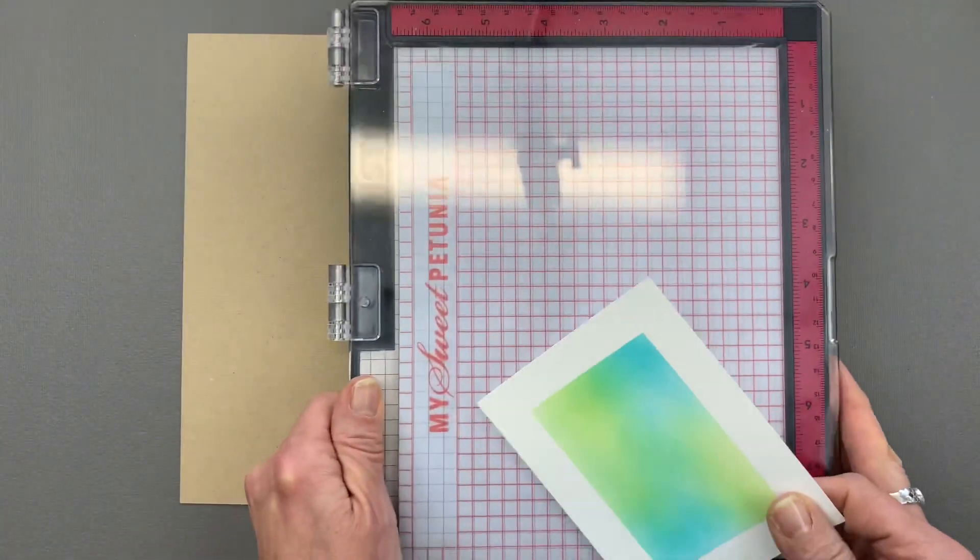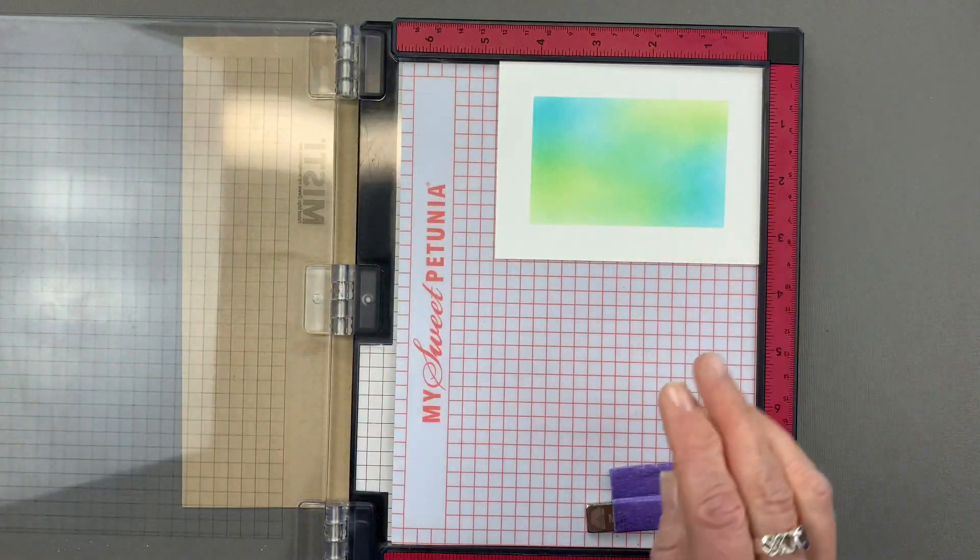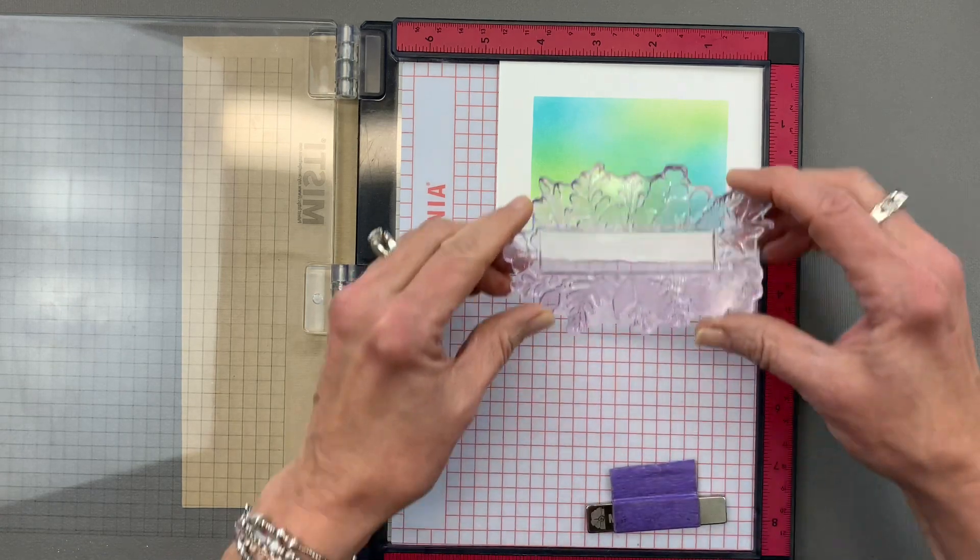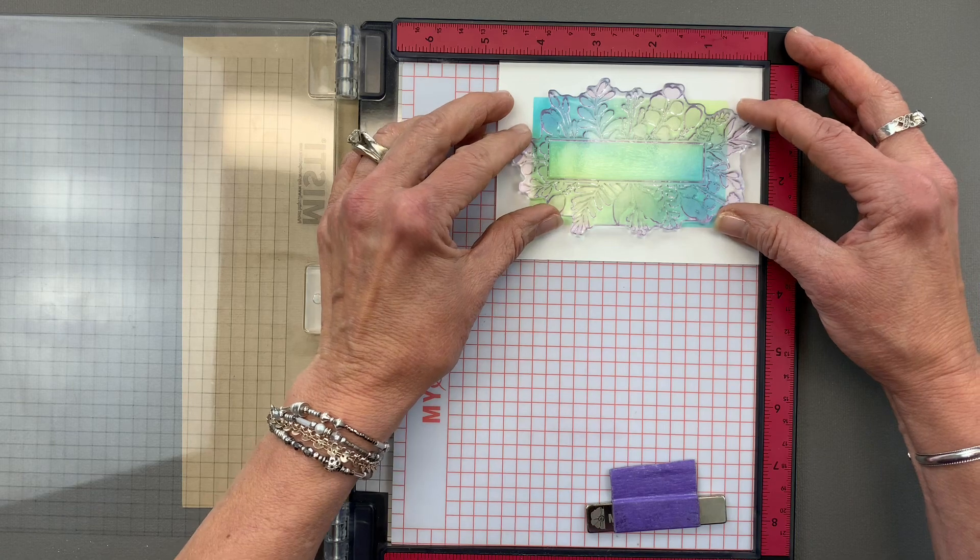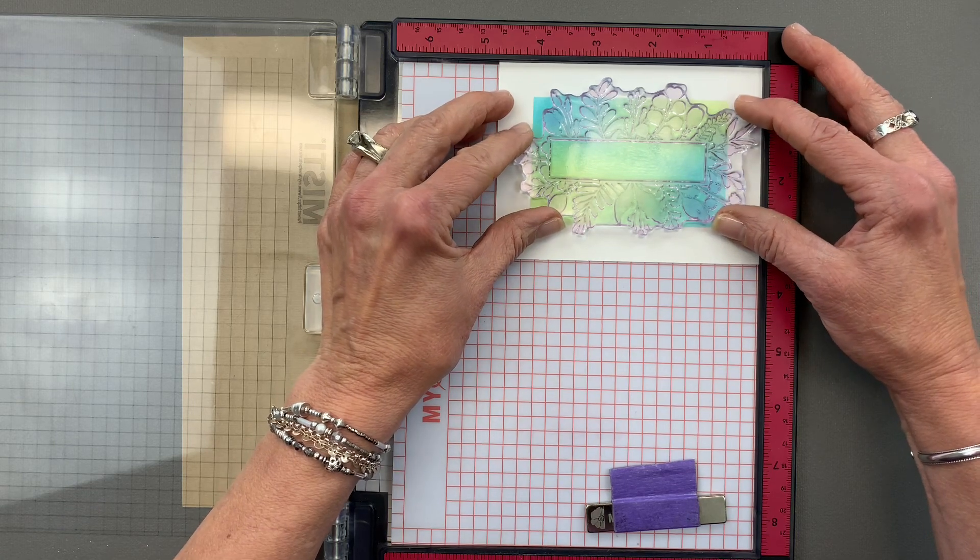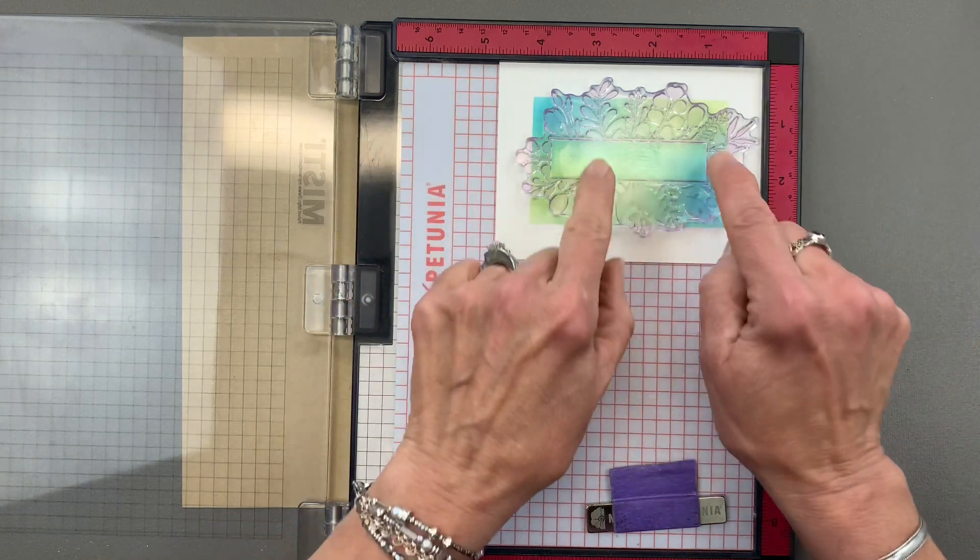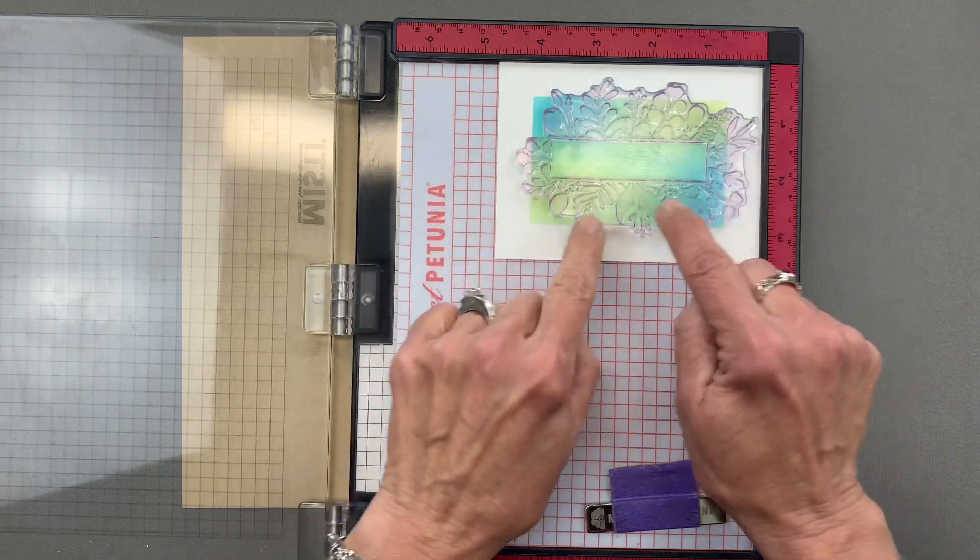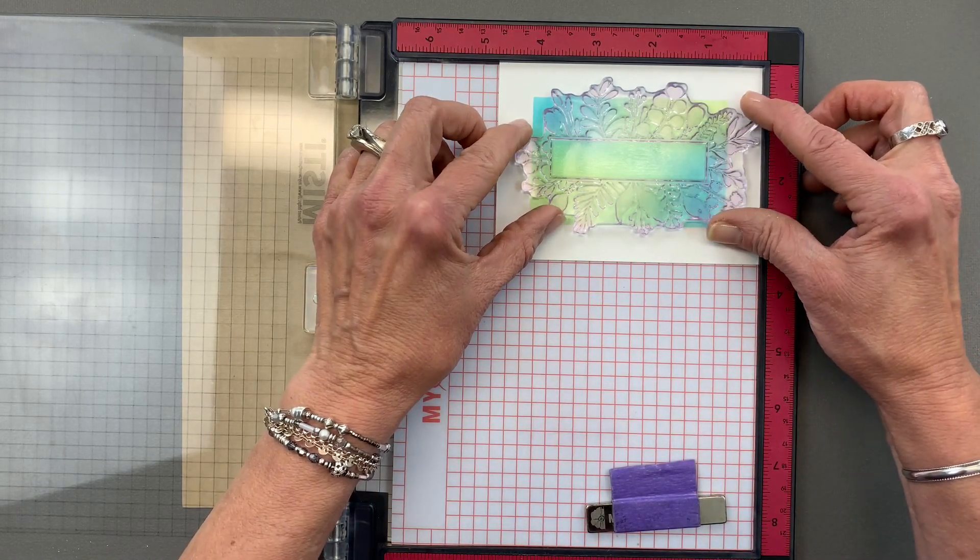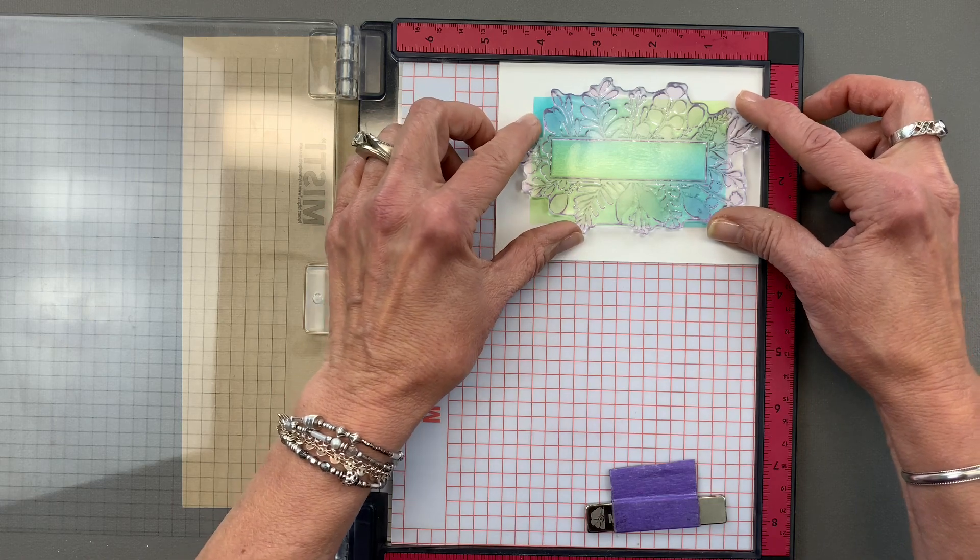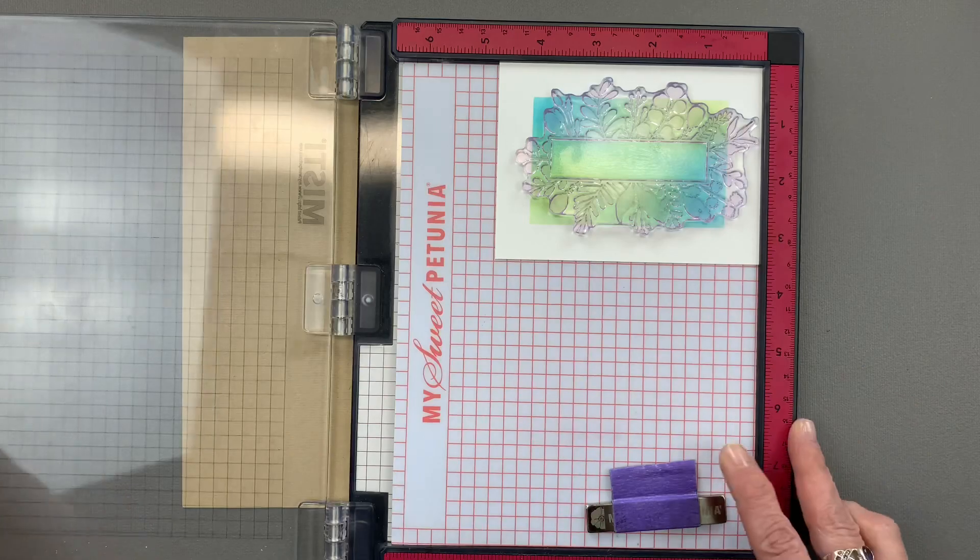So now I'm going to use my Misti for the next step and I'm using the Frame Flora stamp set from the brand new Luck and Love kit. I'm going to place this stamp right over this ink blended area and I want to make sure that it's even, that this box in the center is even so there's the same border on both sides. It's going to hang over the edge on one side a little more than the other but that's okay as long as the box is centered.